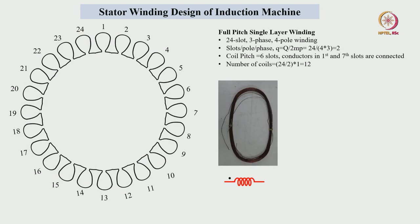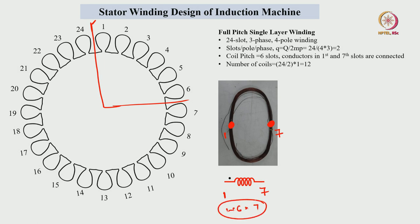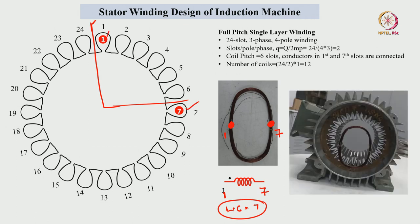With respect to coil 1, the first coil side is placed in slot 1 — I am considering slot 1 as reference. The first six slots correspond to pole 1. So this coil side is placed in slot number 1 and the second coil side of coil 1 is placed in slot number 7. That is, 1 plus 6 equals 7. We can see after making the coil, one by one we insert: slot number 1 on this side and slot number 7 on that side.